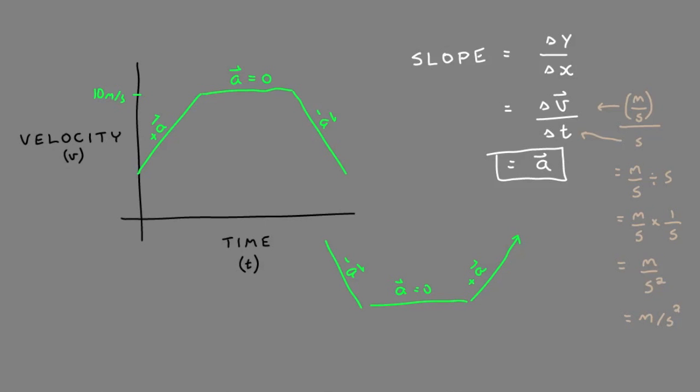So to recap, you can see that the slope on a velocity time graph represents acceleration. So we have a nice way there.